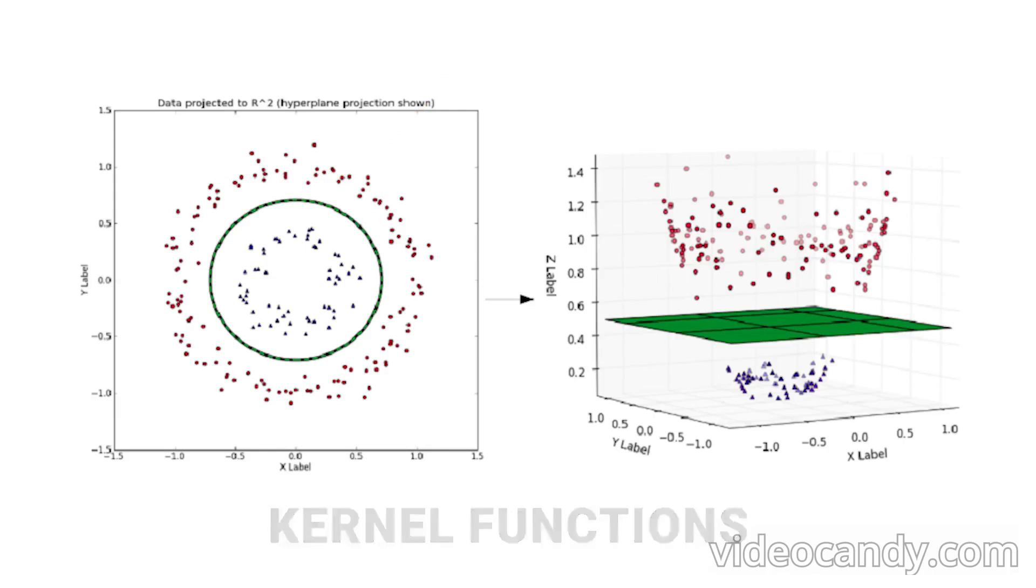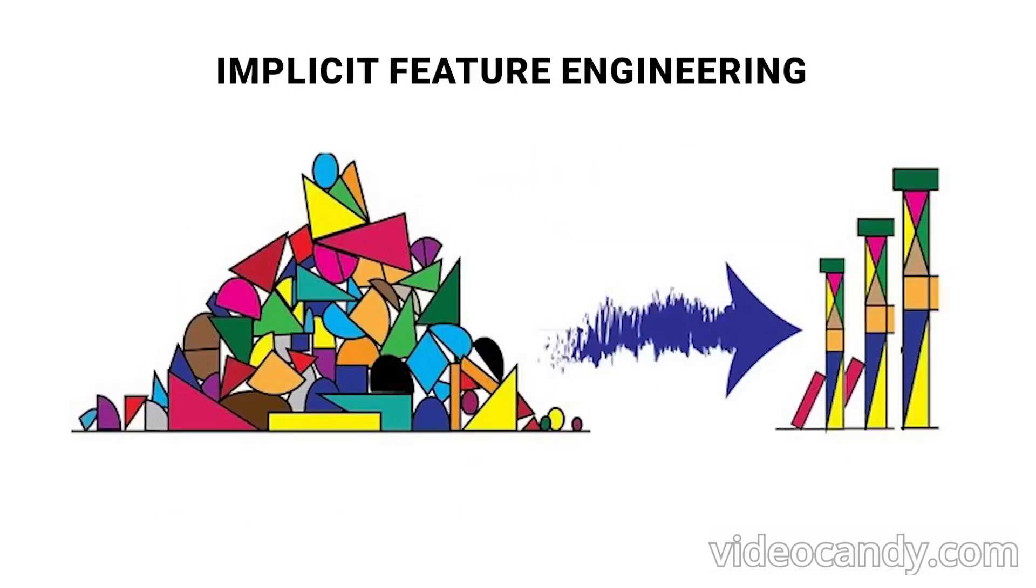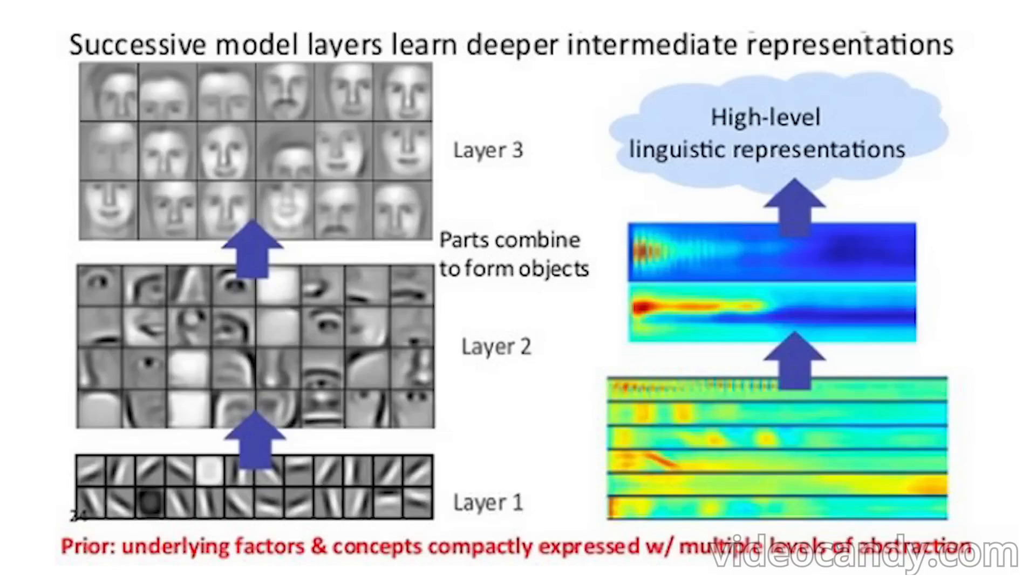This allows for efficient creation of nonlinear decision boundaries by creating complex new features, such as weight divided by height squared, also called the BMI. This is called implicit feature engineering. Neural networks take the idea of implicit feature engineering to the next level, as I will explain later.